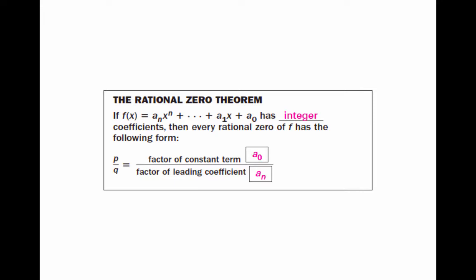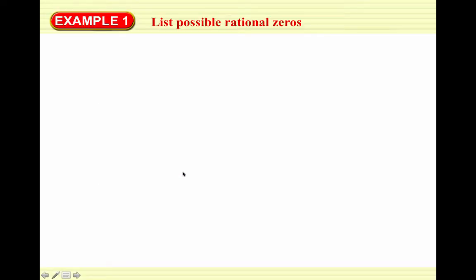If a polynomial function has integer coefficients — we always want to stop and make sure we've got integer coefficients, and if not we need to fix that — then every rational zero of f has the form p over q, where p is a factor of the constant term (the last term) and q is a factor of the leading coefficient (the first term). So it's last over first. And it's any factor of those two terms, not just the terms themselves.